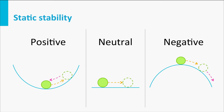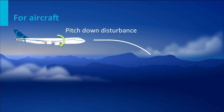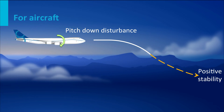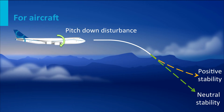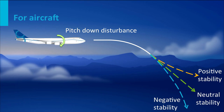What does this mean for flight? For instance, if an aircraft pitches down due to a disturbance — a little turbulence — then if it has positive static stability, it will try to return to its original angle of attack and pitching angle. If it has neutral stability, it will continue moving in the same direction with the same angle of attack and pitch angle. And if it has negative static stability, it will get even worse and move further down.